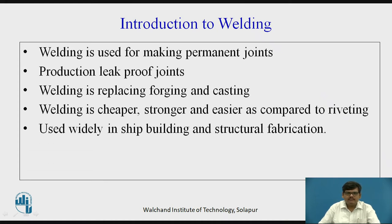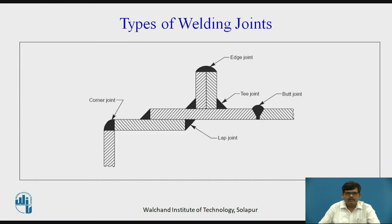For forming big structures of metals and steels, welding is preferred in fabrication. Now moving further to different types of welds — here on screen you can see the sectional area showing the different plates arranged to illustrate the different types of joints.